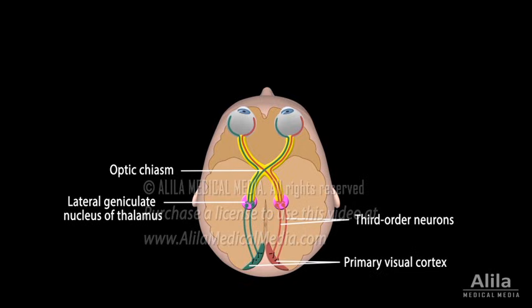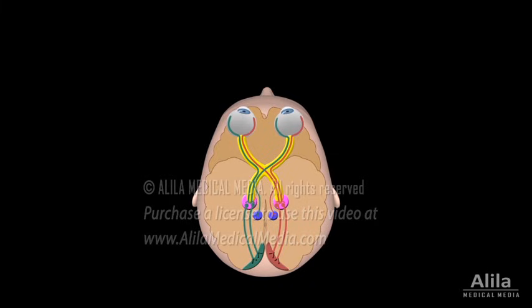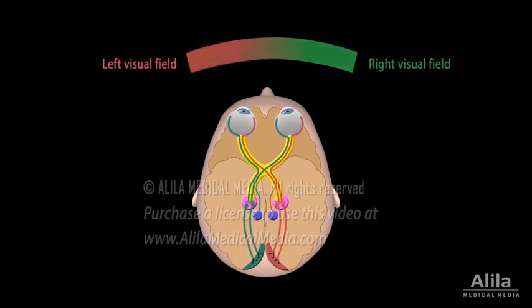Some fibers take a different route — they terminate in the midbrain, and are responsible for the pupillary light reflex and accommodation reflex, among others. Note that objects in the left visual field are perceived by the right side of the brain, which also controls motor responses of the body's left side, the same side as the objects.